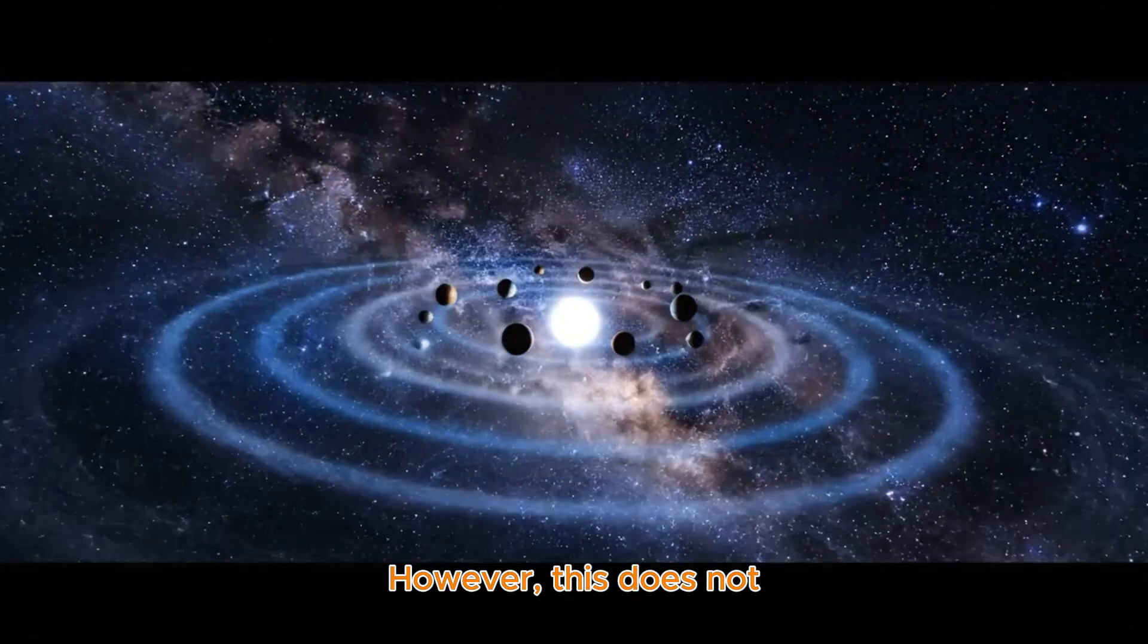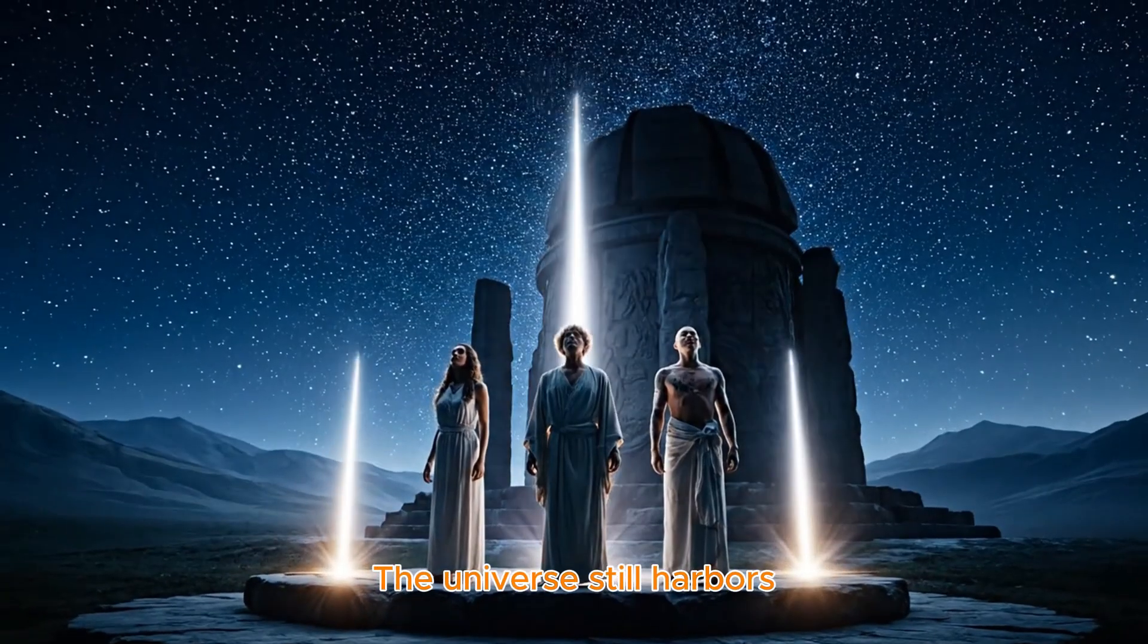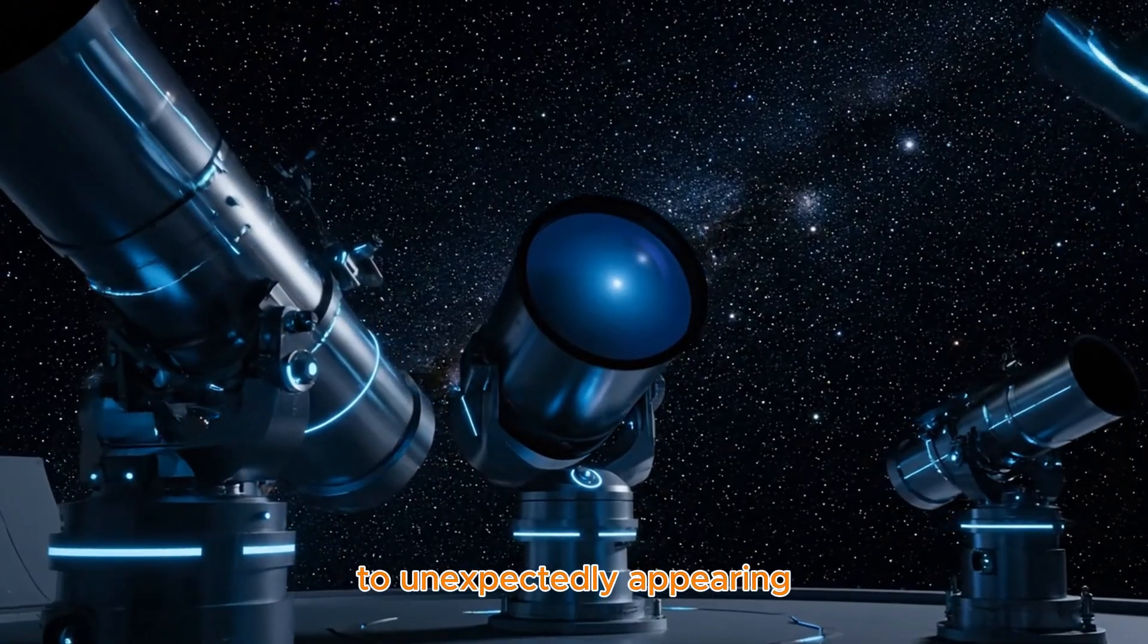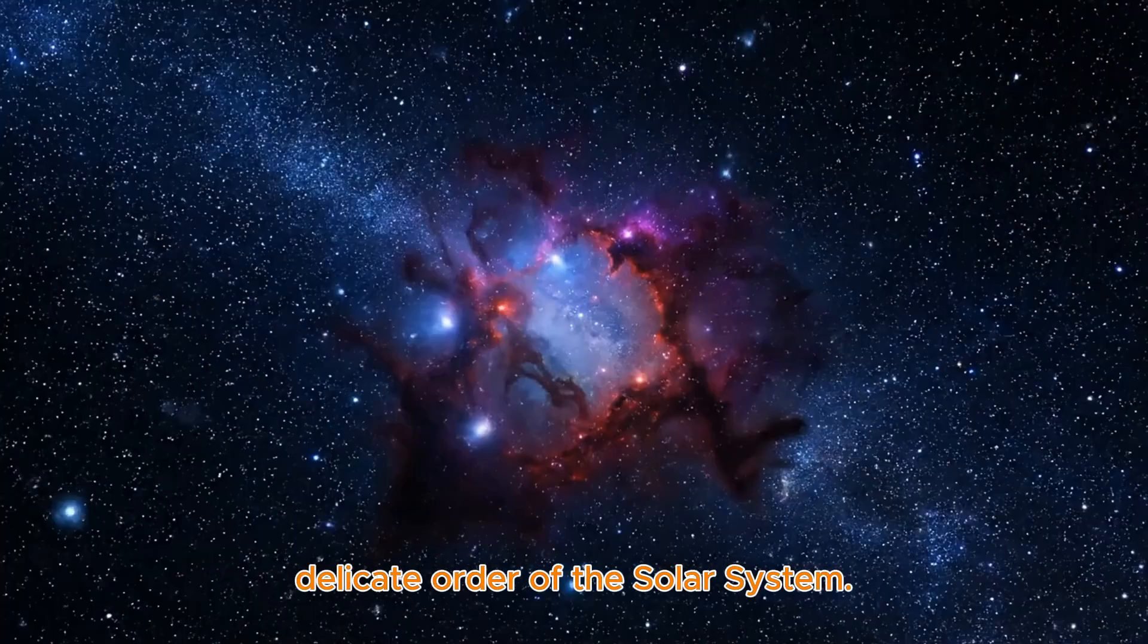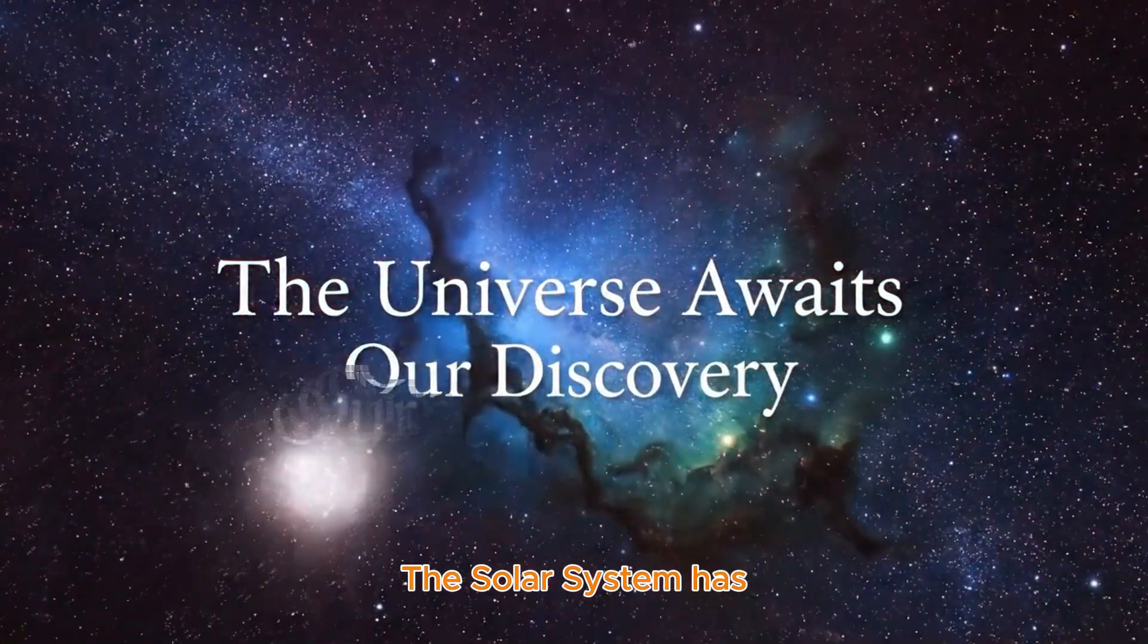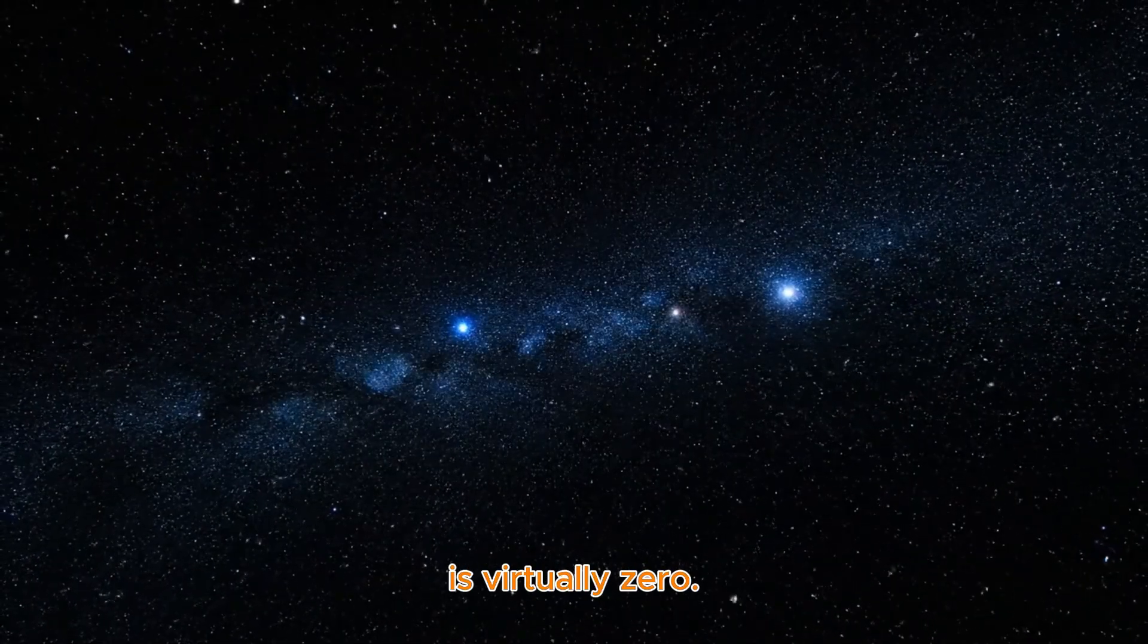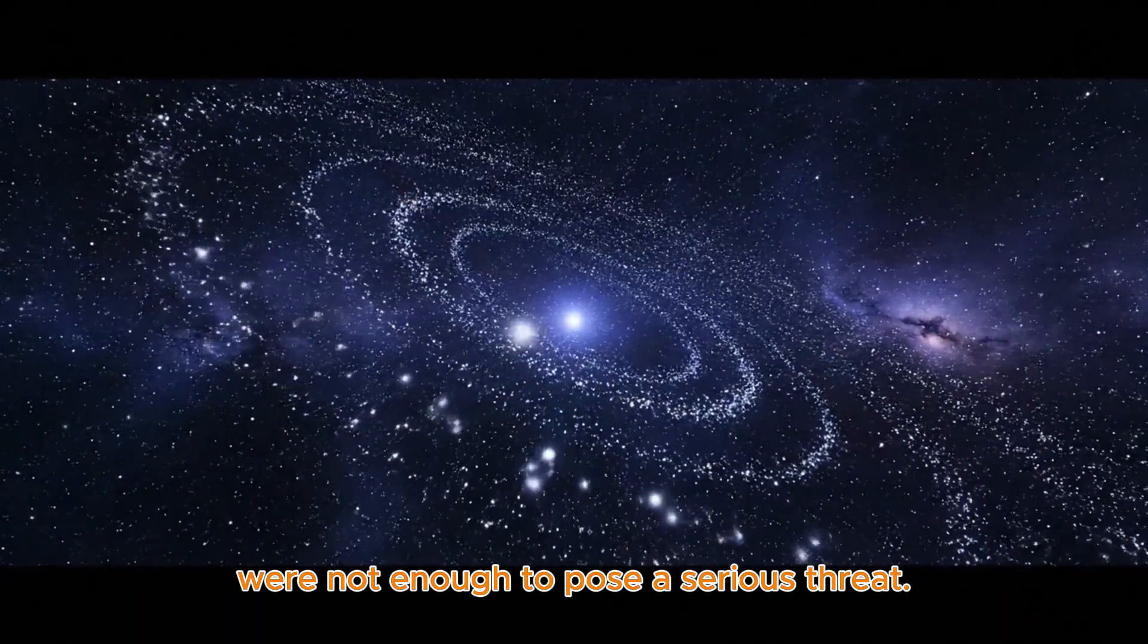The distant future and the immortality of exploration. However, this does not mean that our solar system will be perpetually safe. The universe still harbors countless unpredictable instabilities, from mysterious black holes and rogue stars speeding at hypervelocity to unexpectedly appearing stray celestial bodies. Any such intruder could potentially disrupt the delicate order of the solar system. Yet, we absolutely do not need to worry too much. The solar system has operated stably for billions of years, and the possibility of another star directly intruding into this region is virtually zero. Even rogue objects like Oumuamua, which merely passed by, were not enough to pose a serious threat.